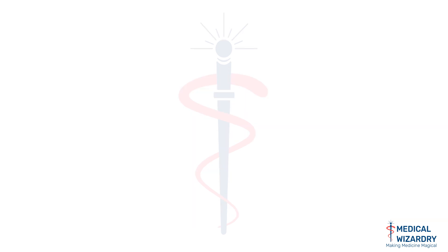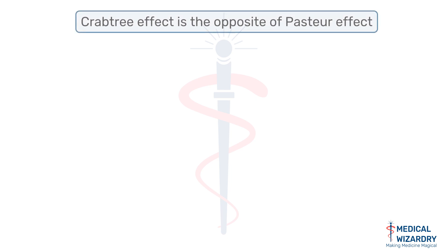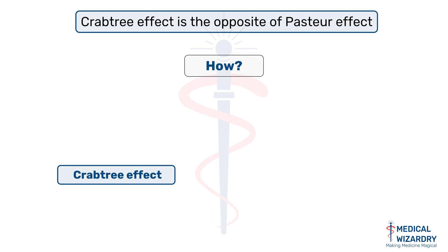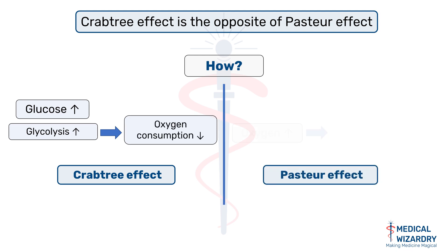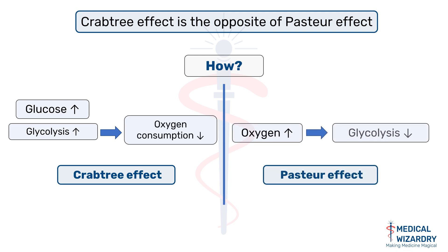Now, can you see that the Crabtree effect is opposite to the Pasteur effect? Let us see how. In the Crabtree effect, more glucose causes more glycolysis and therefore less oxygen consumption by cells. In the Pasteur effect, more oxygen causes less glycolysis.